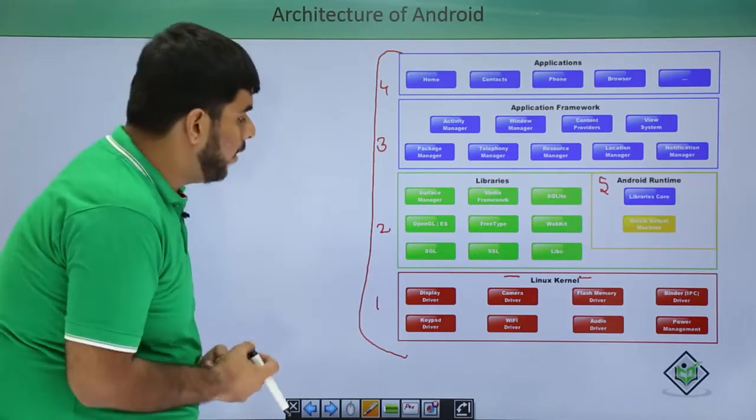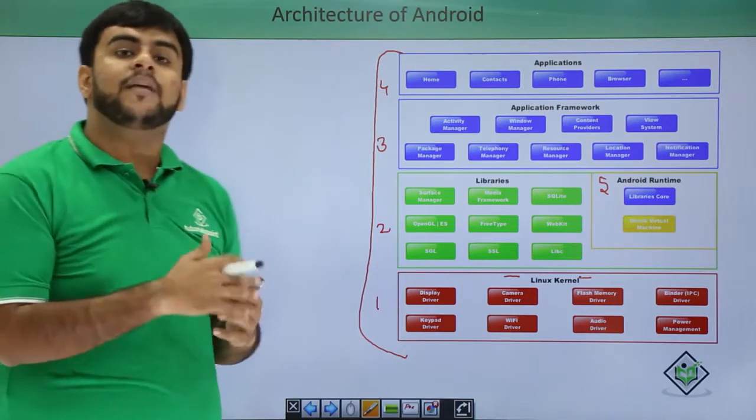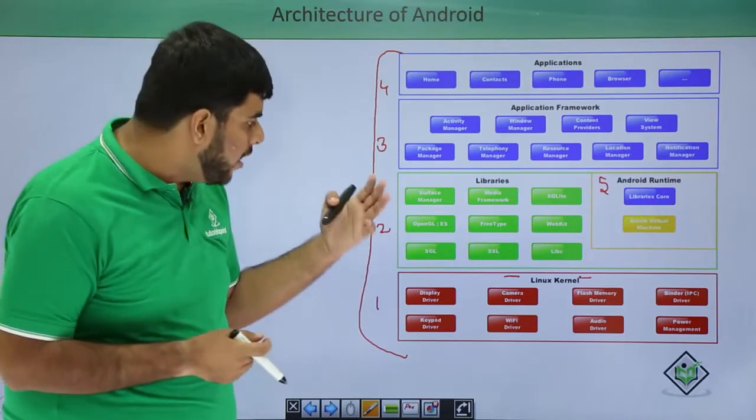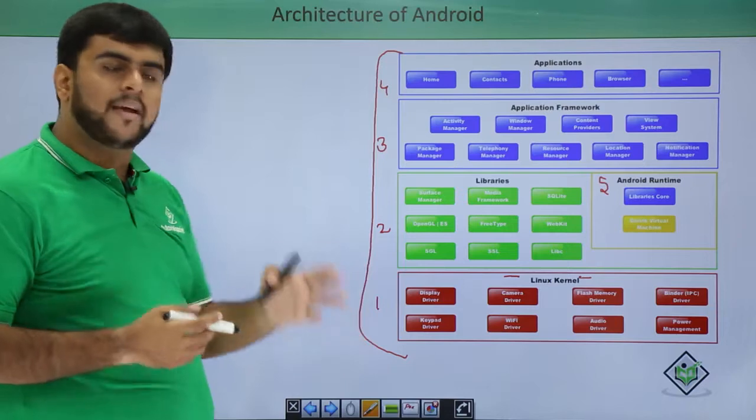Now what is the main work of kernel? The main work of kernel is to get the work done from a hardware. Hardware can be anything: your display, your camera, your wifi, anything can be a hardware.